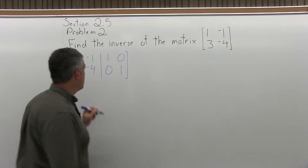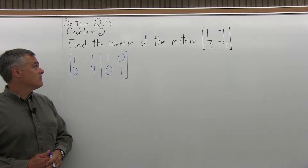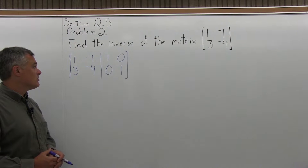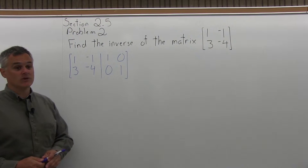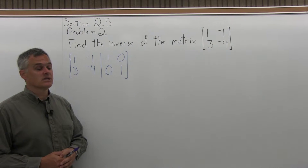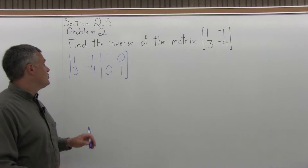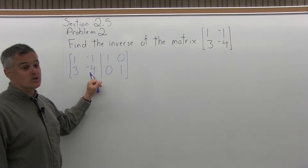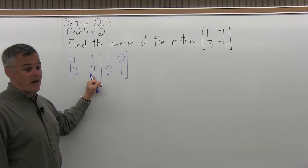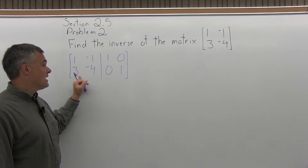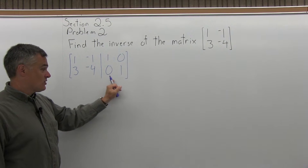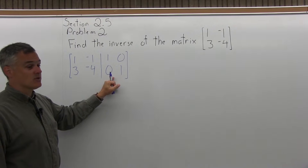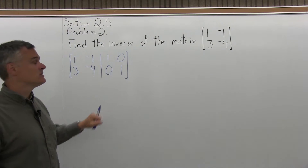So our double matrix: the top row would be 1, negative 1, 1, 0, and the bottom row would be 3, negative 4, 0, 1. You treat that as one big matrix, and then do whatever steps are necessary to solve the matrix on the left so it looks like an identity, and apply those steps to the whole double matrix. What's going to happen is the identity matrix on the right will turn into the inverse.